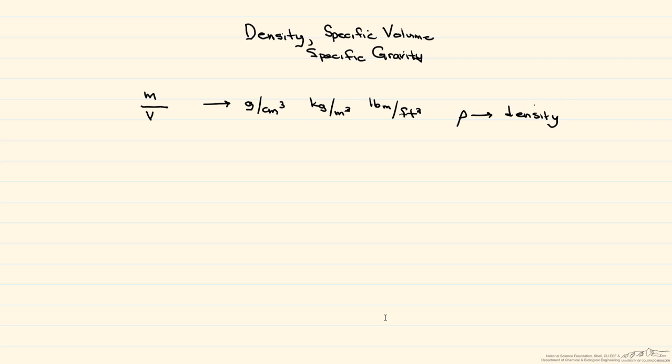So density is often used as a conversion factor relating mass to volume. For example, if you're given the volume of a substance, we can use the density of it to come up with the mass. So if rho is equal to the mass times the volume, then the mass is going to be equal to the density or rho times the volume.